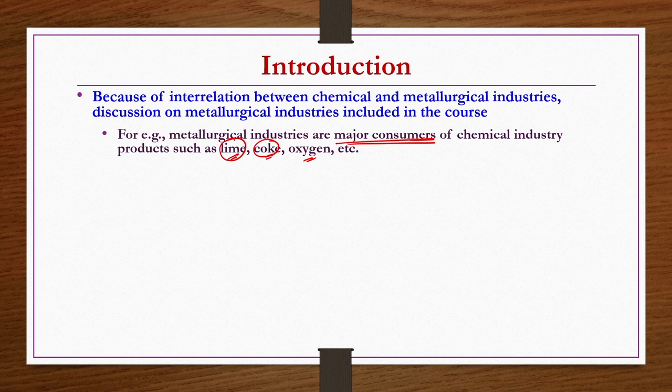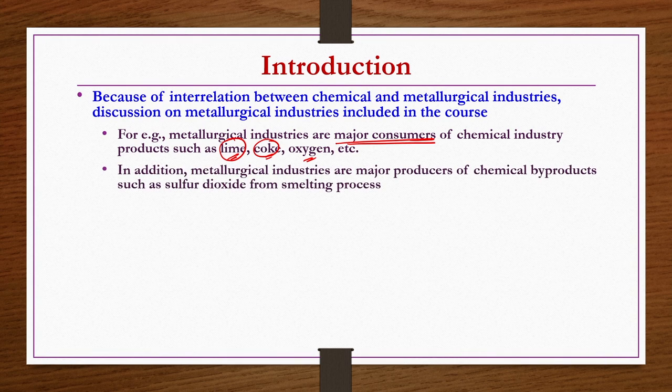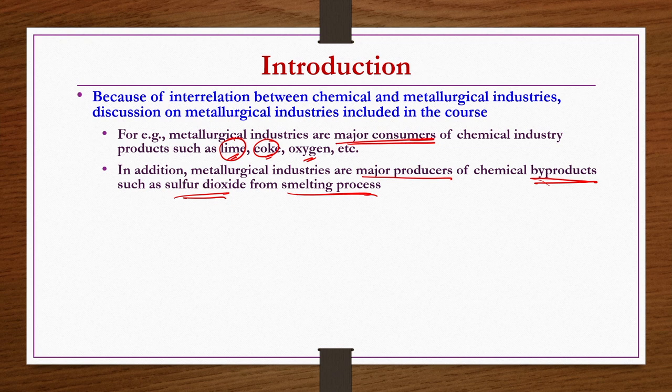There is a connection between metallurgical and chemical industries. Further, metallurgical industries are major producers of chemical byproducts such as sulfur dioxide and sulfuric acid. These byproducts are obtained from smelting processes of different metals like zinc smelting, copper smelting, and iron pyrites smelting. From those processes we get SO2, and also H2SO4 depending on what ore has been utilized for the smelting of ferrous and non-ferrous metals.